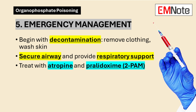Medications: Atropine, an anticholinergic agent, is the first-line treatment, blocking acetylcholine's effects at muscarinic receptors. Administer atropine intravenously until muscarinic symptoms like bradycardia and bronchospasm subside. Pralidoxime, also known as 2-PAM, is a cholinesterase reactivator that reverses organophosphate binding to acetylcholinesterase. Administer it promptly, ideally within the first few hours of exposure, to prevent the aging process that renders acetylcholinesterase irreversibly inhibited.